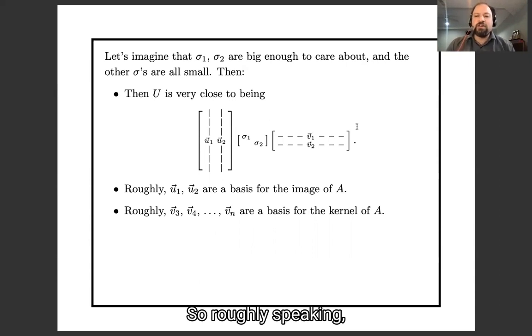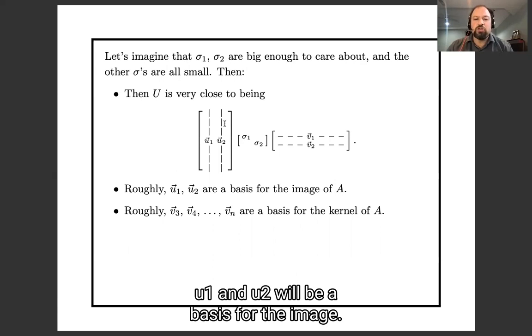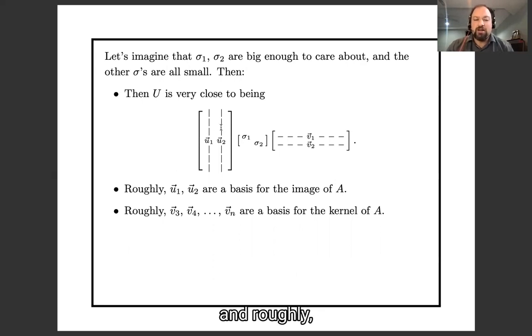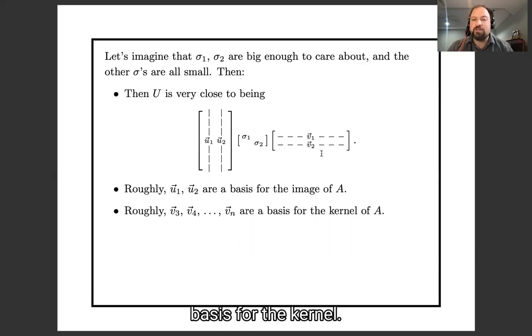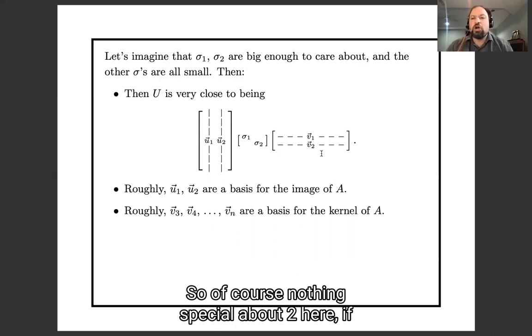So roughly speaking, u1 and u2 will be a basis for the image then. And roughly all those v's we threw away are going to be roughly a basis for the kernel.